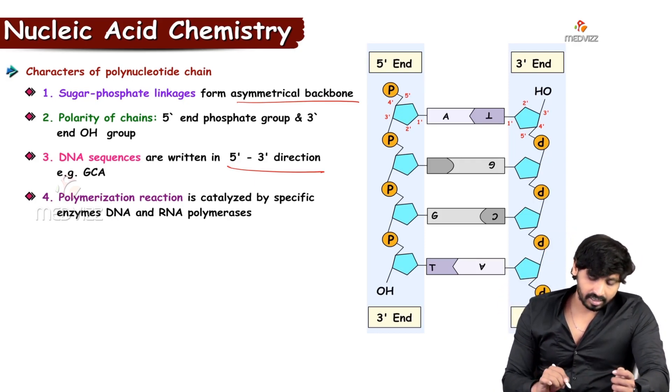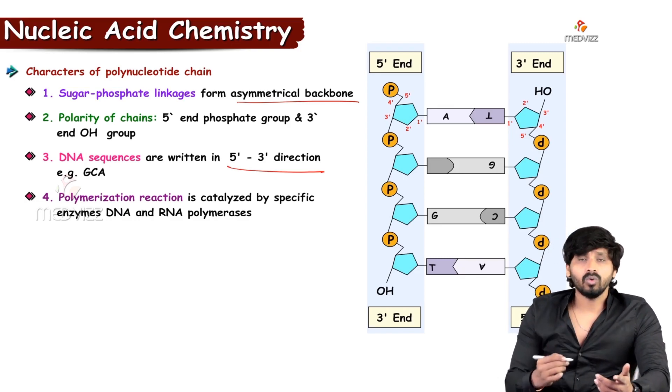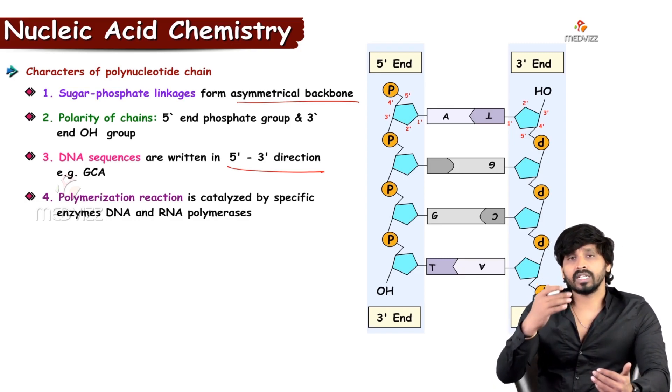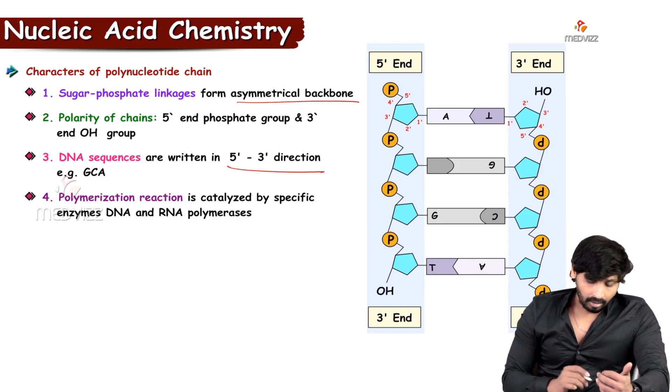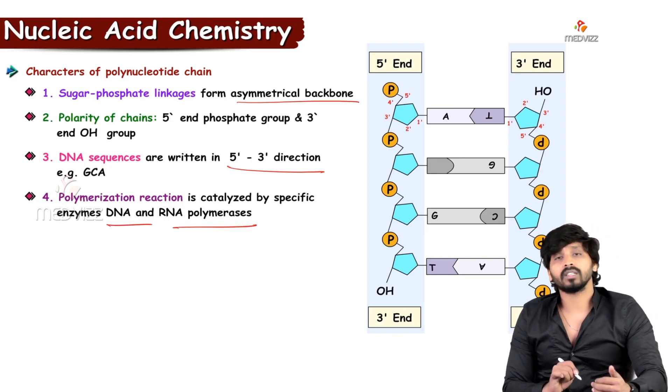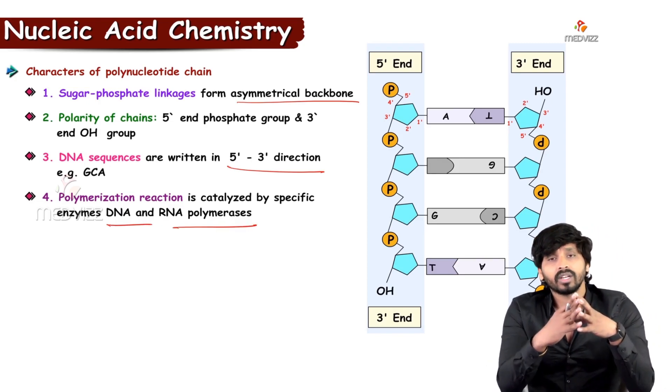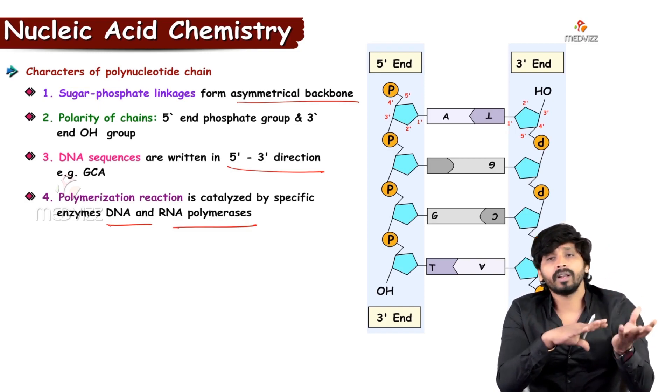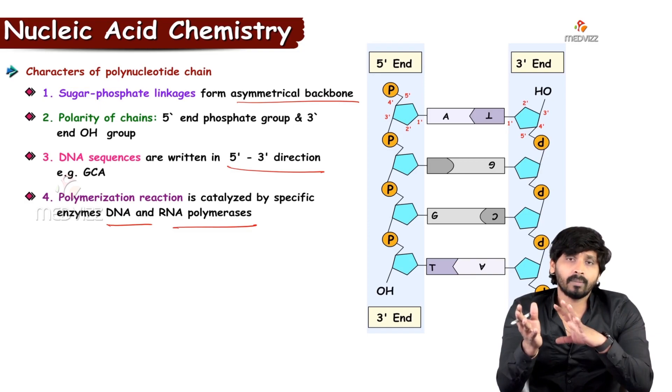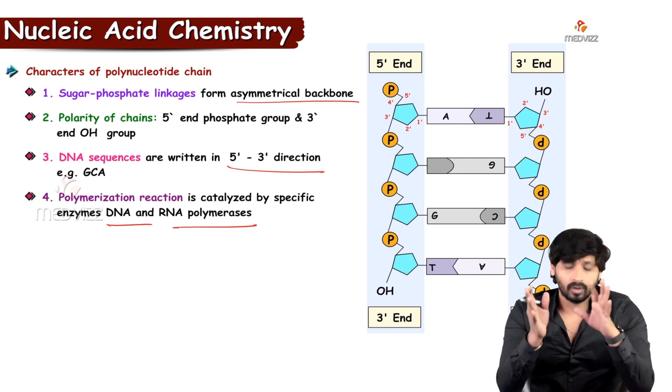And polymerization reaction is catalyzed by, that means how these phosphodiester linkages are forming and how the bases are adding. And these bases are adding based upon the enzymes direction, that is DNA and RNA polymerases. If DNA is synthesizing, DNA polymerase will come to the action, it will add corresponding base. In that way, if RNA is synthesizing, RNA polymerase will come to the action and complementary base will be added compared with the coding strand.